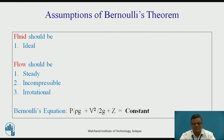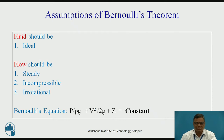If the above assumptions are satisfied, Bernoulli's theorem can be represented in the form of the equation: p/ρg + v²/2g + z = constant. Here, p/ρg is the pressure head, v²/2g is the kinetic head, and z is the potential head or datum head. The summation of these three remains constant.